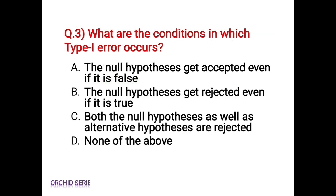Question 3: What are the conditions in which Type 1 error occurs? Option A: The null hypothesis gets accepted even if it is false. Option B: The null hypothesis gets rejected even if it is true. The correct answer is Option B — this is the condition for Type 1 error. Option A, where the null hypothesis gets accepted even if it is false, is the condition for Type 2 error.